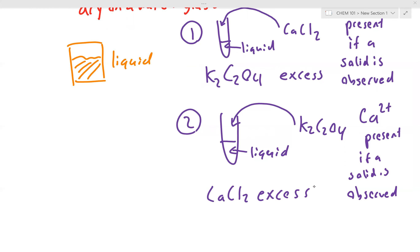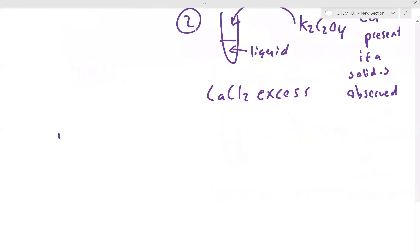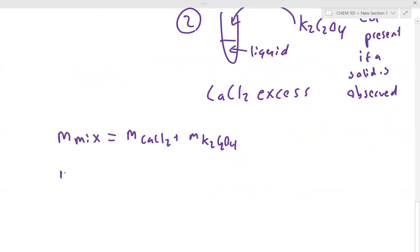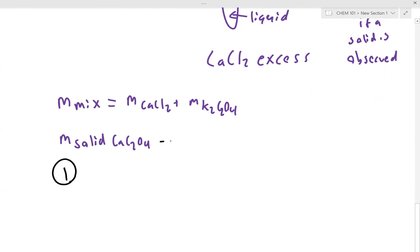Now for the final calculations. You're going to know the mass of your solid mixture, which equals the mass of calcium chloride plus the mass of potassium oxalate. You'll also know the mass of solid calcium oxalate obtained from the reaction by weighing your filter paper. The first part of the calculation is to go from the mass of solid calcium oxalate monohydrate to the moles of calcium oxalate monohydrate.